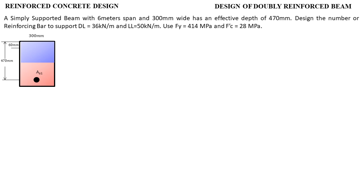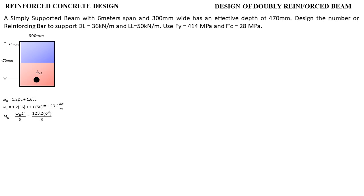To start, we need to get the factored load using the load combination of 1.2 times the dead load plus 1.6 times the live load. Substituting the given values, this gives us 123.2 kN/m. With the factored load, we can now get the ultimate moment using the formula for a simply supported beam: factored load multiplied by L² over 8, which gives us 554.4 kN·m.